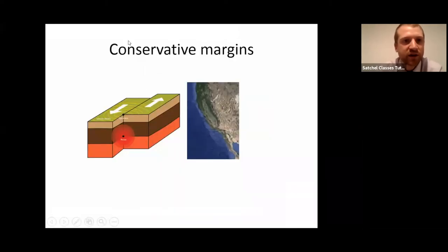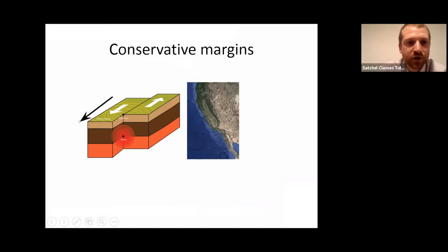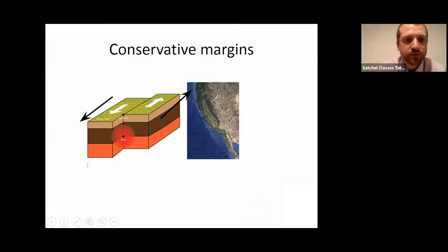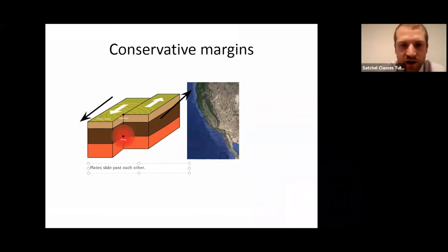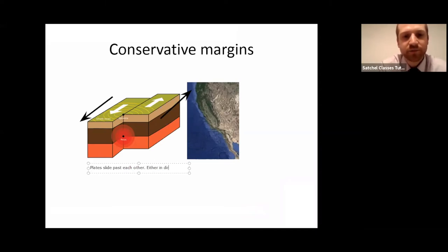The last two boundaries are relatively straightforward. These can be plate boundaries either moving in the same direction or in opposing directions, but they tend to be at different speeds. At what we call conservative boundaries, plates slide past each other. Nothing's being destroyed, nothing's being made — they slide past each other either in different directions or at different speeds.